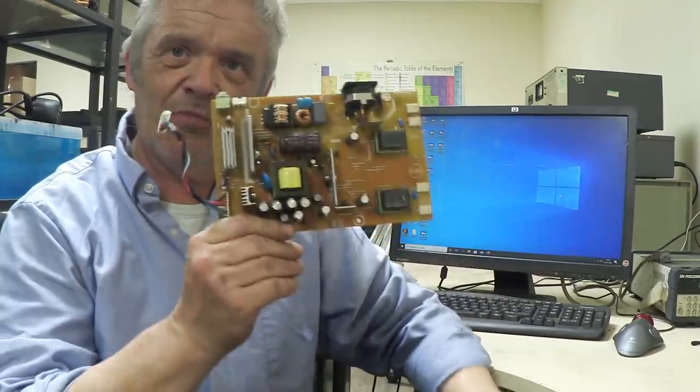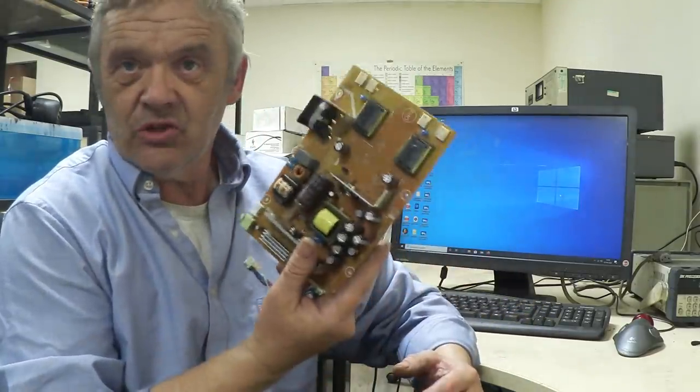Now obviously when we take this apart we get lots of bits out of it. But what I wanted to look at was this thing which is the power board. You get a lot of this kind of disposed electronics all over the place. You can scavenge the parts and reuse them. Some of the easier parts to scavenge and reuse are things like the capacitors, the resistors, the transformers, the connectors. They're really quite easy to get off.